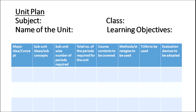A unit plan would look like this. For example, in the subject of Science for Class 7, we have a unit on diseases. In the first column — major idea or concept — we have the unit 'Diseases.' Under sub-units or sub-ideas, we have 'Types of Diseases,' which can be four types: communicable and non-communicable diseases, and diseases transmitted through vectors and infectious diseases. The number of periods required for each sub-unit is noted down.